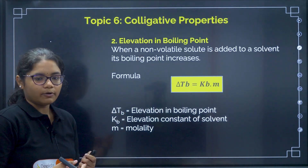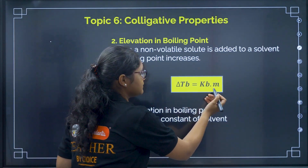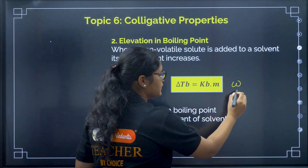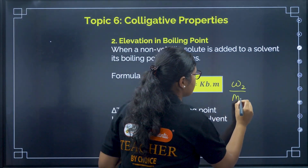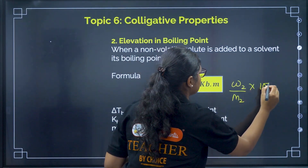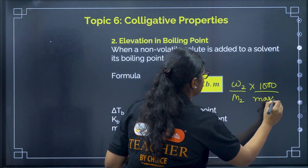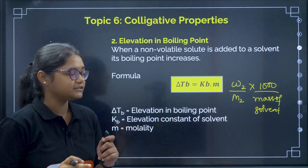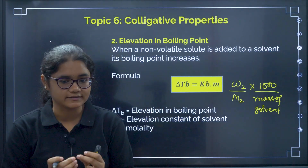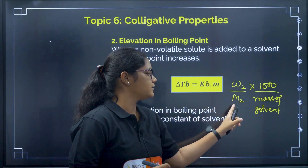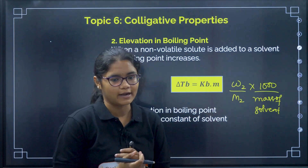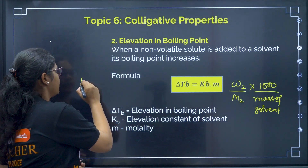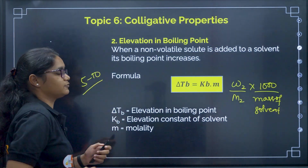Next is elevation in boiling point. Direct formula-based question: ΔT_b = K_b × m. Here you also have to remember the molality formula: m = (W₂/M₂) × (1000/mass of solvent). Generally, you either have to calculate the boiling point of the solution or calculate the molecular mass of the solute. Prepare 5 to 10 questions from this topic alone.